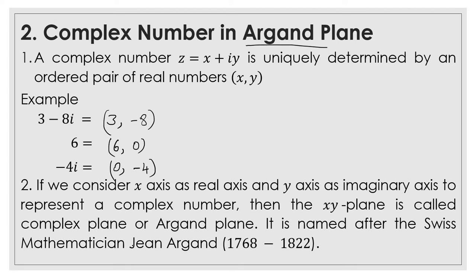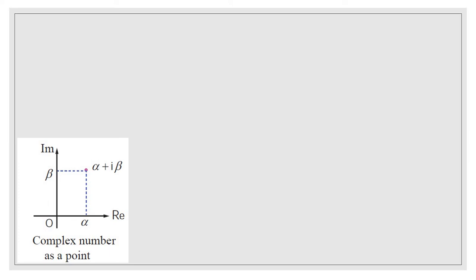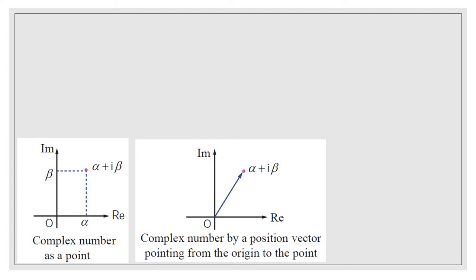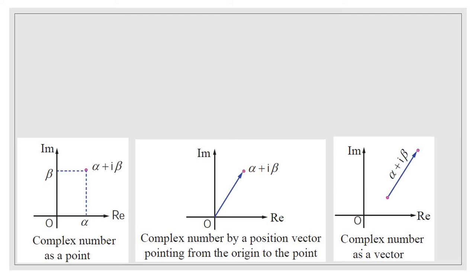Complex numbers may be represented as a point also. Here is the point — this is x units away from the origin along the real axis, and the height, that is how much distance it is away from the origin along the y-axis, is beta. So it is represented as alpha plus i beta. Complex numbers may also be represented as a position vector — all position vectors start from the origin. The next one: complex number as an individual vector, alpha plus i beta.